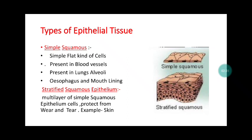When we call it stratified - when multiple layers of simple squamous cells combine together, they form a thick layer. At that time we call it stratified squamous epithelial tissue. When they combine together, they give specific strength to that particular tissue. Example is skin - the skin is also made up of stratified squamous epithelial tissue because multiple layers are combined together. That's why it protects from wear and tear, and our skin is very tough.